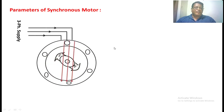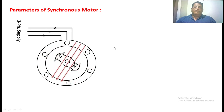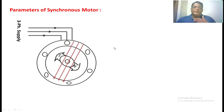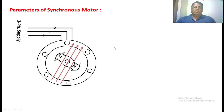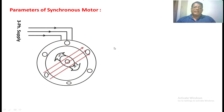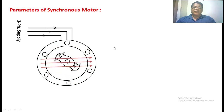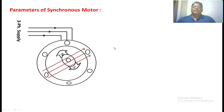A rotating field is created from the stator winding which is running at synchronous speed. By means of external means, we are rotating the rotor near to the synchronous speed. Once the rotor speed is near to synchronous speed, at that point we give the DC excitation to the rotor. There is a magnetic locking between the stator flux and the rotor, so the rotor will also be running in the same direction as the stator flux, and the speed is also the synchronous speed.